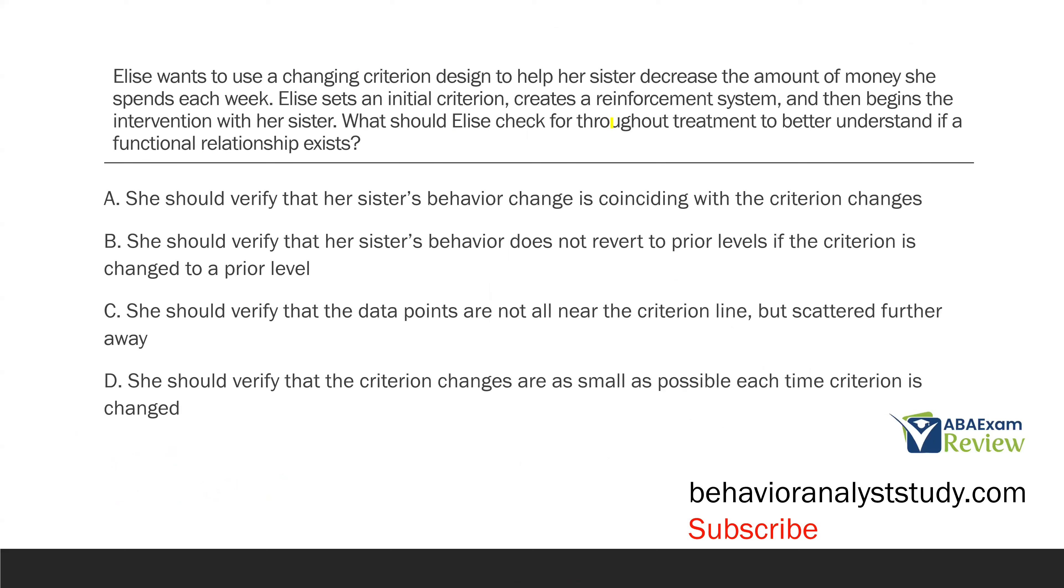Elise wants to use a changing criterion design to help her sister decrease the amount of money she spends each week. Elise sets an initial criterion, creates a reinforcement system, and then begins the intervention with her sister. What should Elise check for throughout treatment to better understand if a functional relationship exists? So we're looking at Elise and what is she doing? She wants to use a changing criterion design to decrease her sister's behavior. The question is specifically asking about what Elise needs to check for throughout treatment to understand if a functional relationship exists. When does a functional relationship exist? It exists when our independent variable or our manipulation is impacting the dependent variable and nothing else.